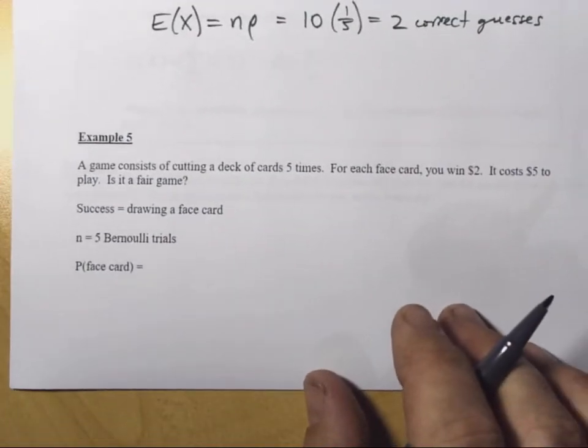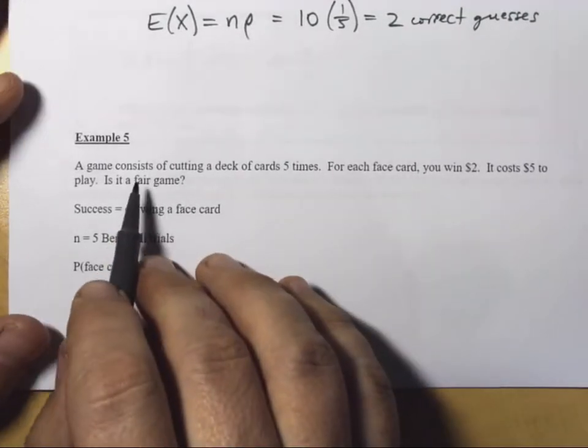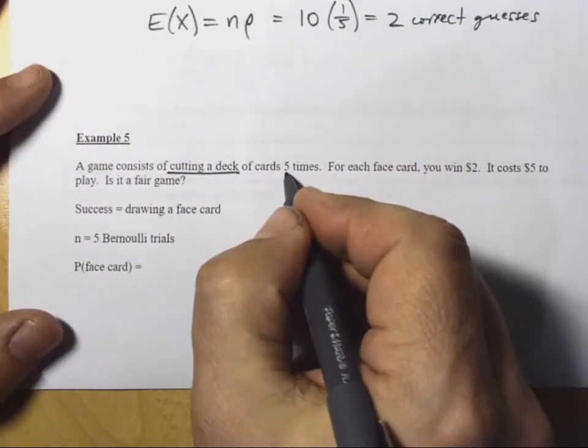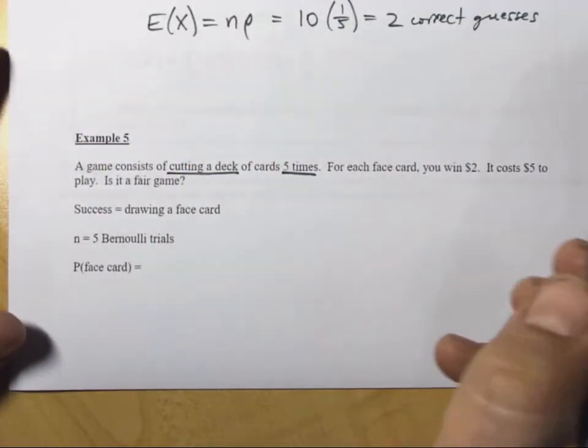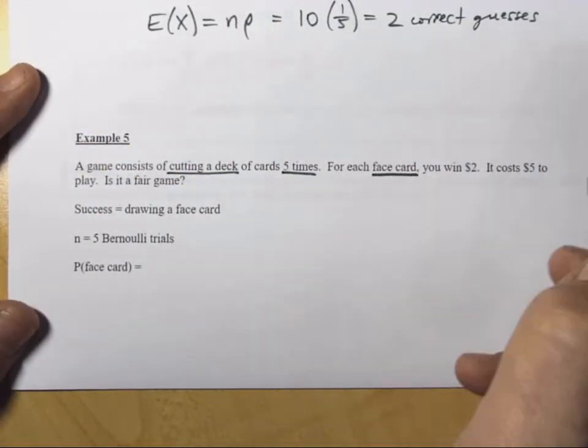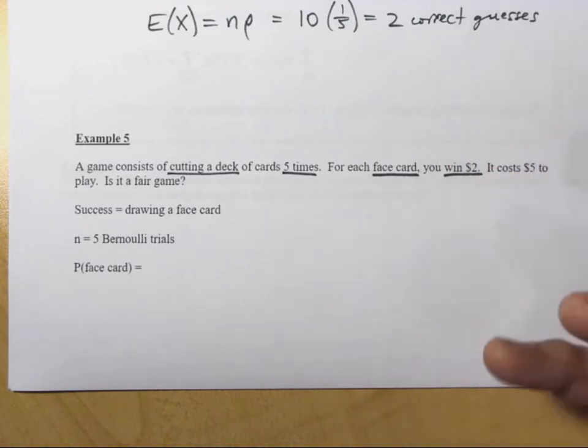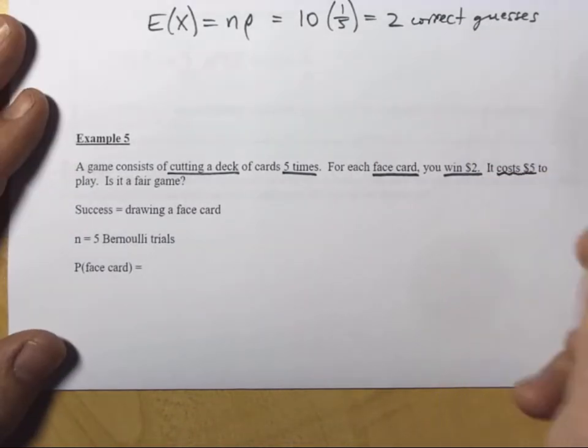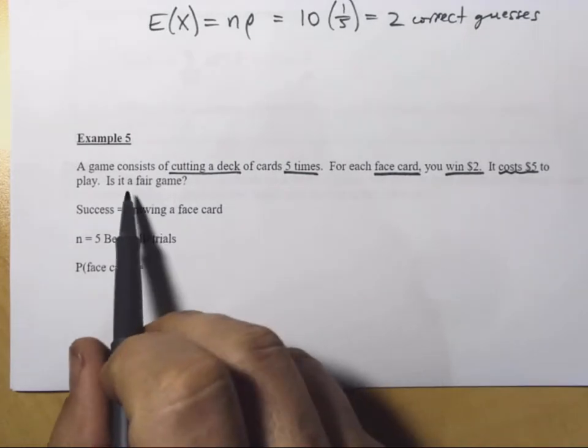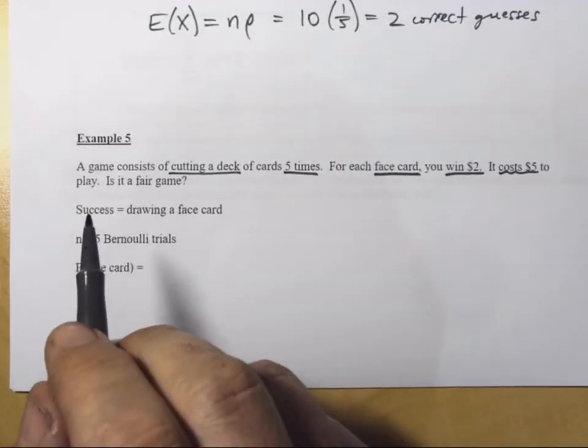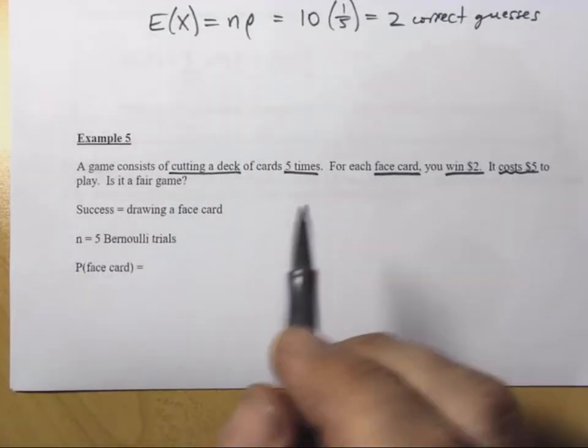Okay? And example number 5. A game consists of cutting a deck. Cutting a deck means you show the card, you put it back. We're cutting a deck 5 times in a row. For each face card, you win $2. Every time you cut a face card, you get paid $2. That's great. But, unfortunately, it costs $5 to play. Right off the bat, does this look like a fair game to you or not? What do you think? Answer yes or no and have a good answer in your head before we move on.